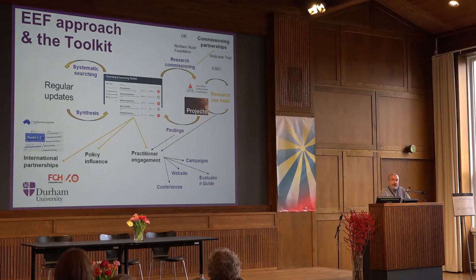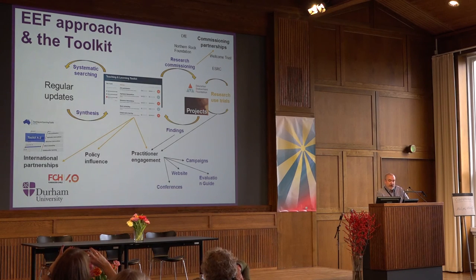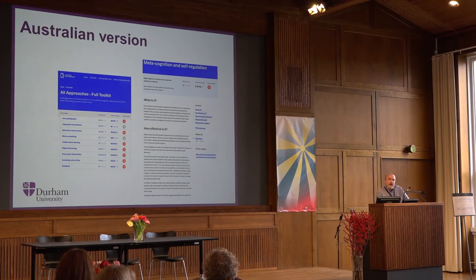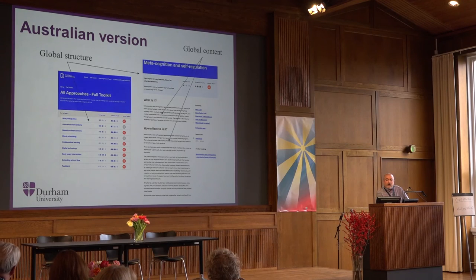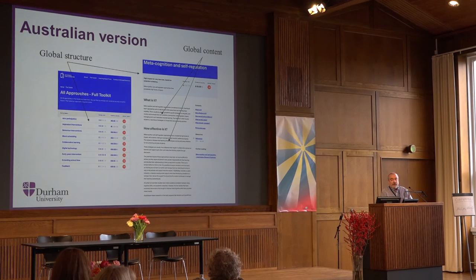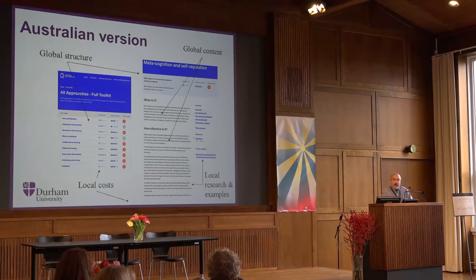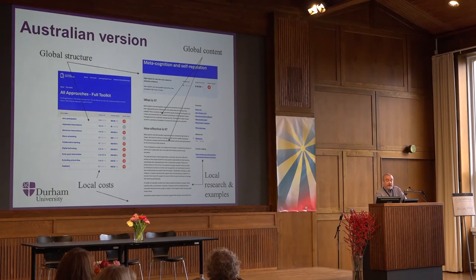Of course practitioners access the toolkit directly and it has policy influence. We're also developing international partnerships — there's a version of the toolkit now in Australia, and we're currently in discussions with Fundación Chile to develop a version for Latin America. In the Australian version, the overall structure and global-level content is very much the same — the layouts and headings look very similar to the version available in England, and the definitions and overall estimates of effectiveness remain consistent. Then there's local costing translated into the local currency with local cost estimates, and the global content is mediated with local searches about relevant research in Australasia. This seems to be a model that may work more widely.